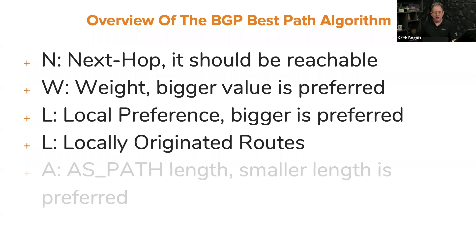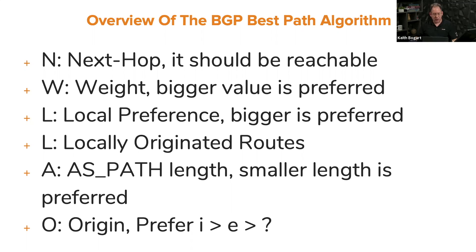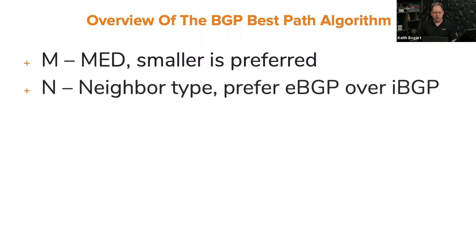Going through the best path selection process quickly: after local preference, we look at the AS path length — the shortest AS path is preferred. Then the origin code: routes with an origin code of IGP, typically originated using the network command in BGP, are preferred over routes with an origin code of incomplete, which are routes originated with the redistribute command. Then the smallest MED is preferred, and eBGP neighbors are preferred over iBGP neighbors.